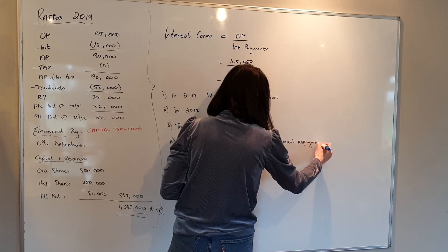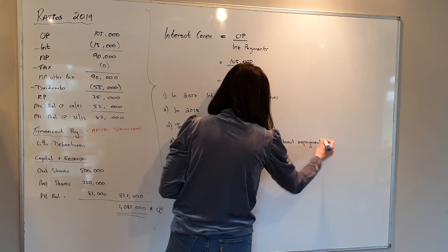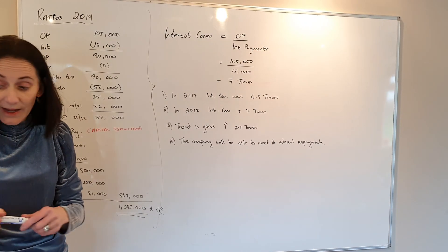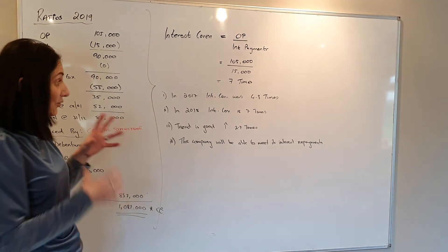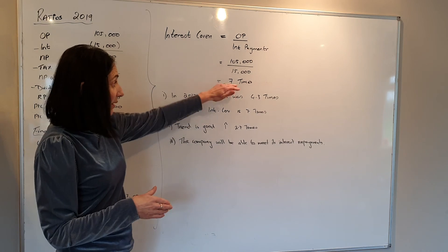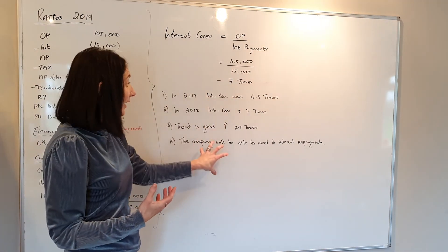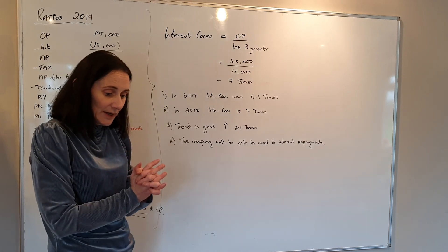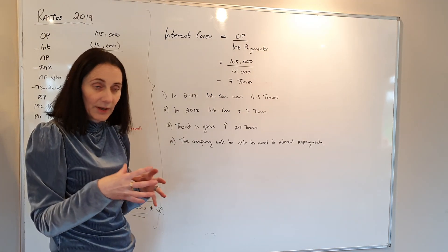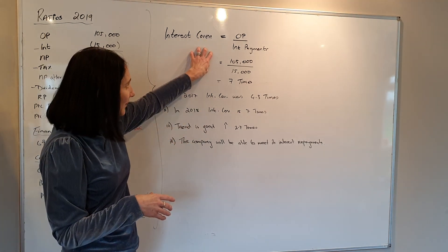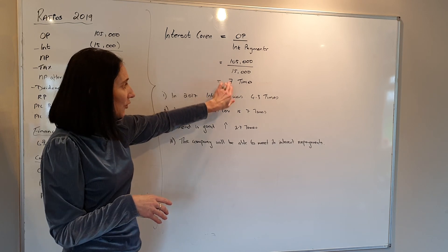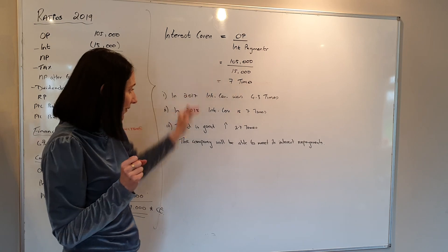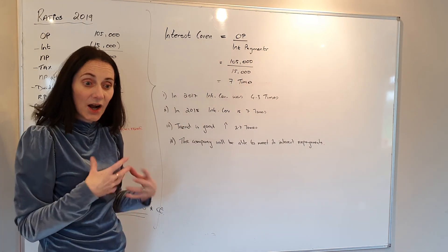This is usually worth about 2% in the exam, but interest cover can come up in part A. If it comes up in part A you could get around 12% — roughly 10% for calculating it and 2% for the comments. Keep to the structure: write down your formula, fill it in, give two decimal places, state your units, and write your comments to get full marks on gearing.